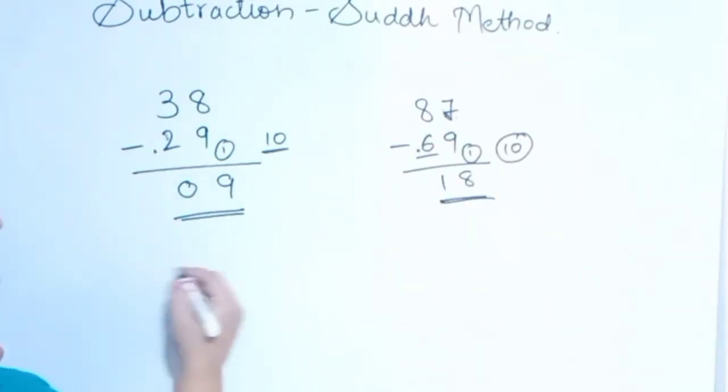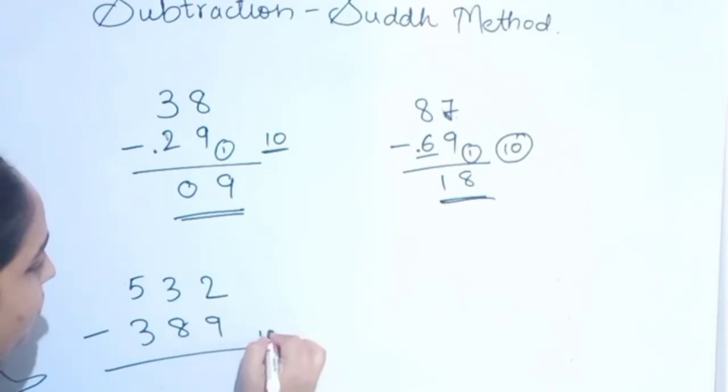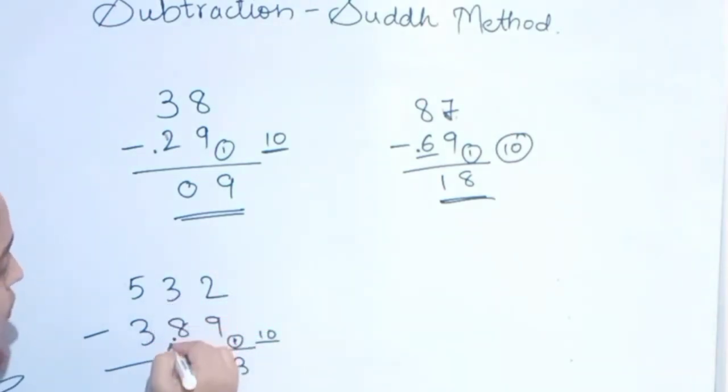532 minus 389. Again base is 10, so 1. And dot is here. It is 2 plus 1 is 3. Now this is 9 and this is 3. What we will do? Again check the base. Base is 10, and this is 9, so 1 more. And dot is here. Now this became 1 and 4, and this became 4, so 1. 143 is the answer.